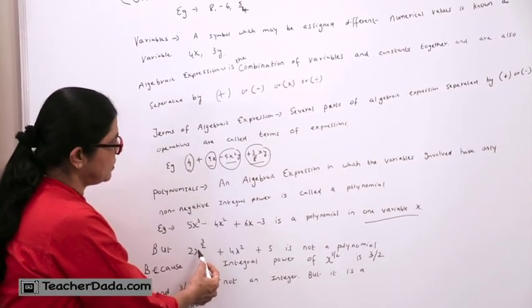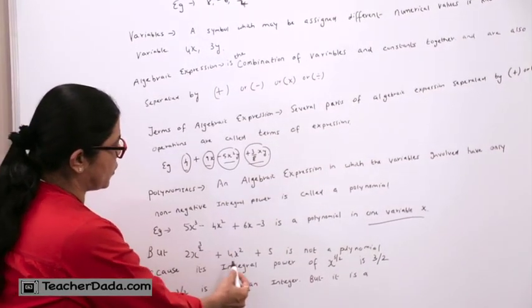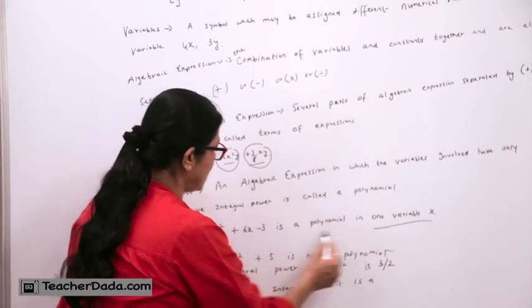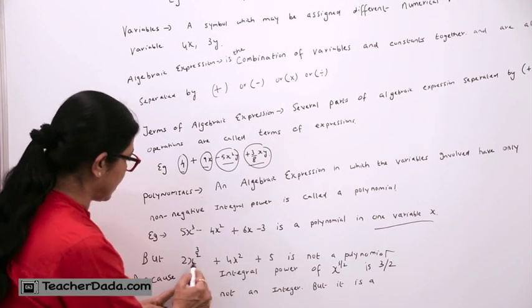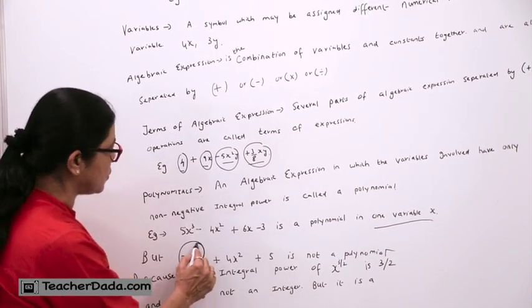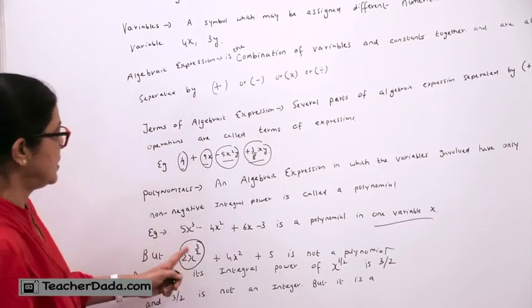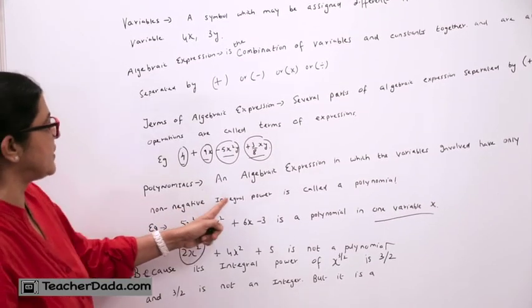2X to the power 3 upon 2 plus 4X square plus 5 is not a polynomial because the power is 3 upon 2 which is a fraction, whereas it has to be a non-negative integral power.